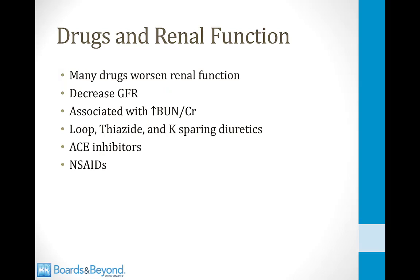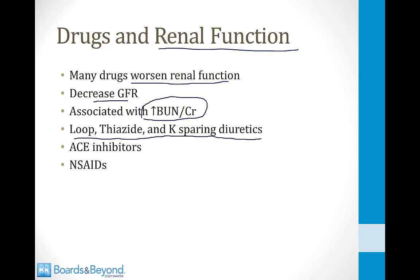Several drugs can worsen kidney function by decreasing GFR, causing rising BUN and creatinine. Thiazide and potassium-sparing diuretics interfere with the kidney's ability to concentrate and excrete urine. ACE inhibitors vasodilate the efferent arteriole and can drop GFR. NSAIDs interfere with prostaglandin synthesis and can also drop GFR. Patients on any of these medications may develop acute renal failure. That concludes our module on renal failure.